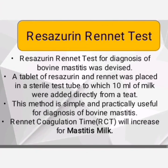Now let's discuss the Resazurin-Rennet test. The Resazurin-Rennet test for diagnosis of bovine mastitis — a tablet of resazurin and rennet is placed in a sterile test tube, to which 1 ml of milk is added directly from the teat. This method is simple and practical for the diagnosis of bovine mastitis. The rennet coagulation time will increase for mastitis milk.